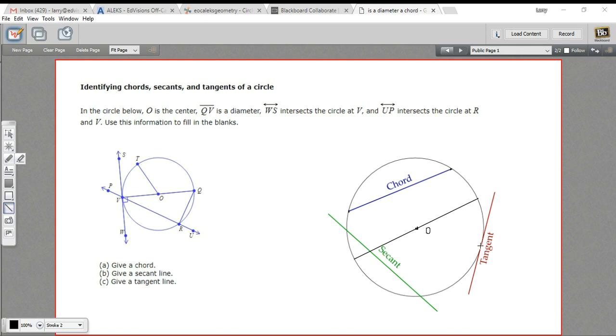A tangent just touches the circle in one little point. And the tangent has a special quality, and that is if you draw a line from that point where the line touches the circle to the center of the circle, what you get is a 90-degree angle. So that's a special quality of tangents that we'll talk about more later.